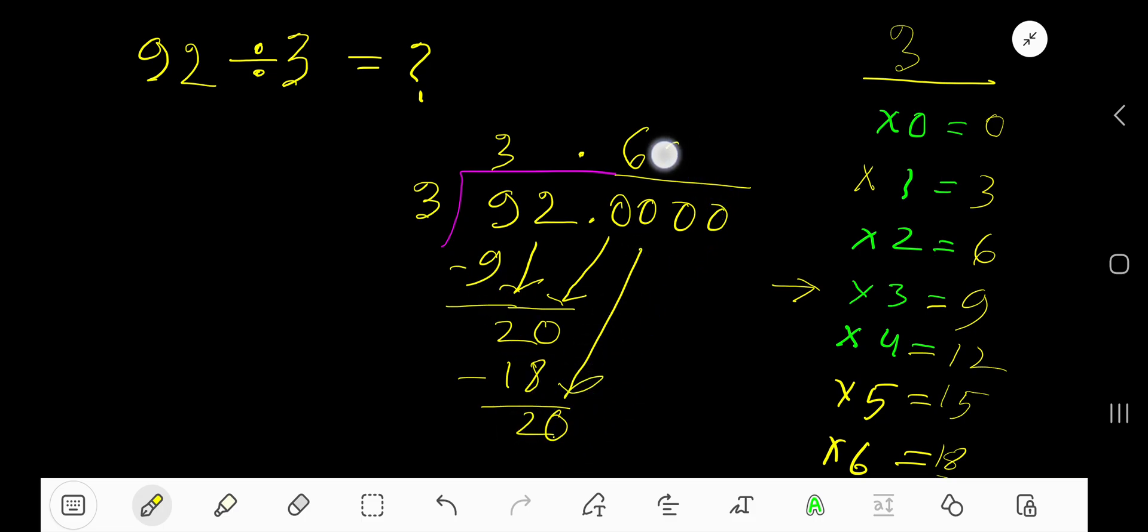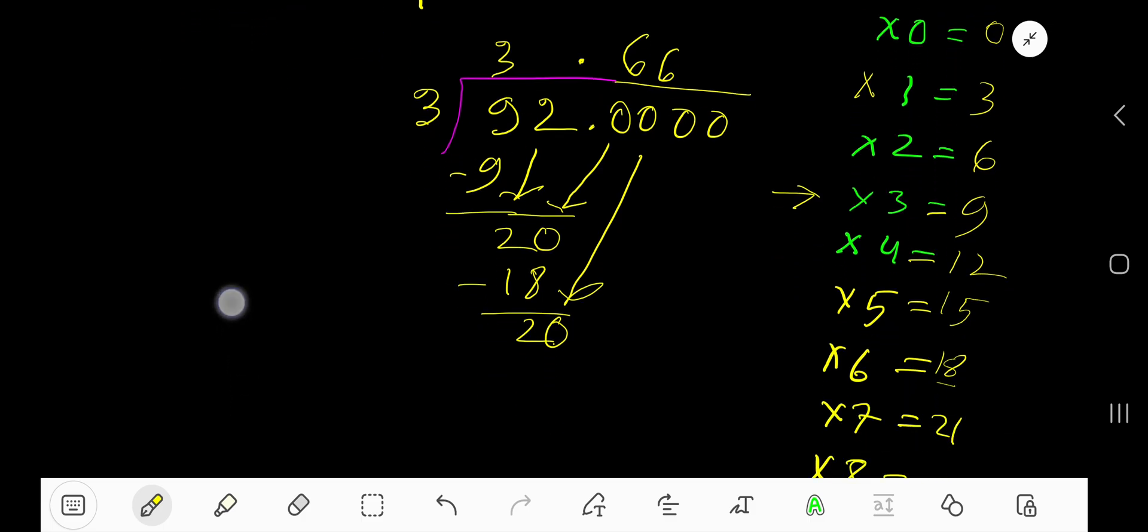6. 3 goes into 20 again 6 times. 6 times 3, 18. Subtract, 2. Bring down the next zero. 20.